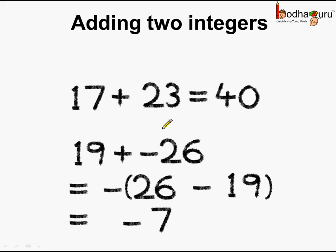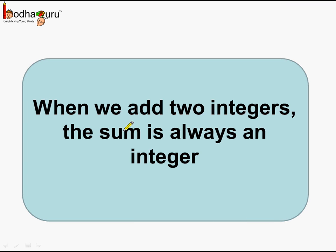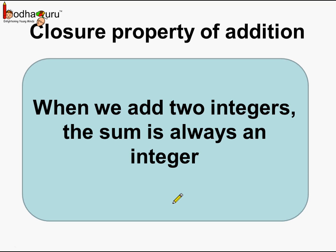What do we see? When we add two positive integers, the answer is an integer, and when we add one positive and one negative integer, the answer is also an integer. So what can we say? We can say: when we add two integers, the sum is always an integer. This property is called the closure property of addition.